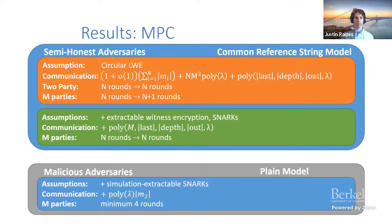Our compiler is perfectly round-preserving for two parties. For the general m-party case, we add one additional round. By additionally assuming extractable witness encryption and succinct non-interactive arguments of knowledge, we can remove this extra round and get a perfectly round-preserving compiler even for the multi-party case, at a slight cost to the communication overhead.